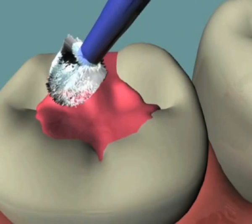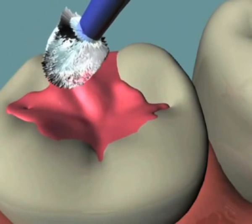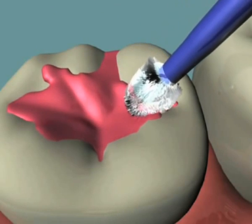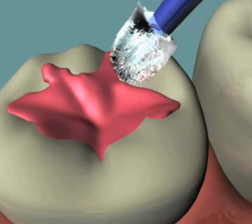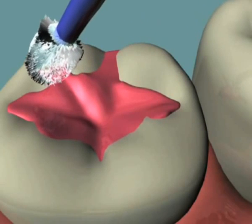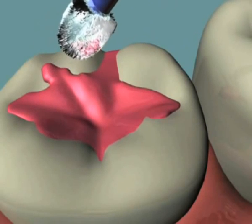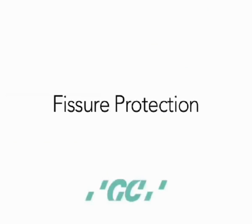Of special focus is the protection of exposed enamel surfaces on erupting first and second permanent molars. These teeth are at their highest risk of caries during the 12- to 24-month period of eruption. This procedure, often undertaken in situations where moisture control is difficult, is called fissure protection.